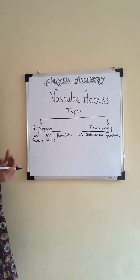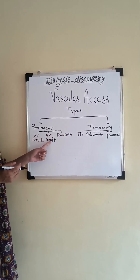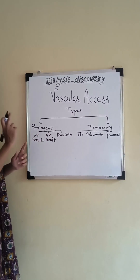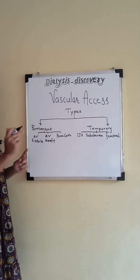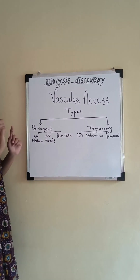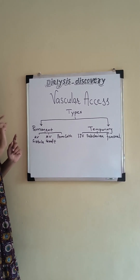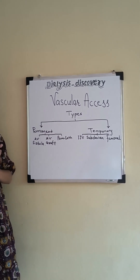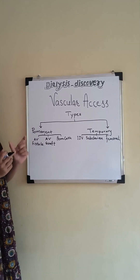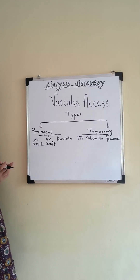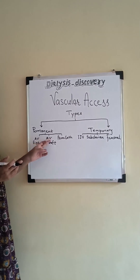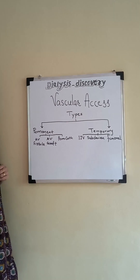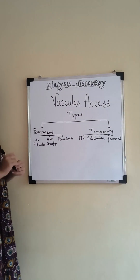AV graft is the connection between the artery and the vein by connecting a tube of PTFE, that is polytetrafluoroethylene. The maturation time of the AV graft is 2 to 4 weeks.